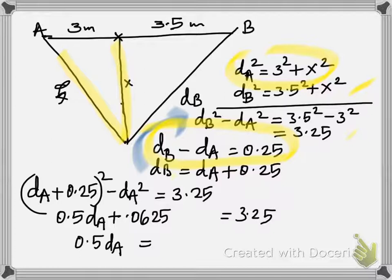Now make d_B the subject and substitute into the other equation, which is what you're seeing here. Then the d_A squared, positive and negative, would get cancelled.